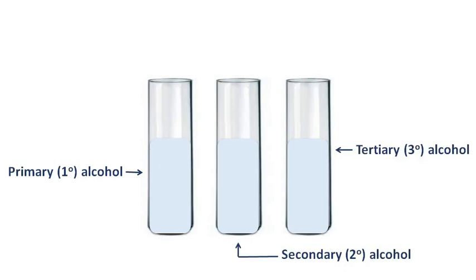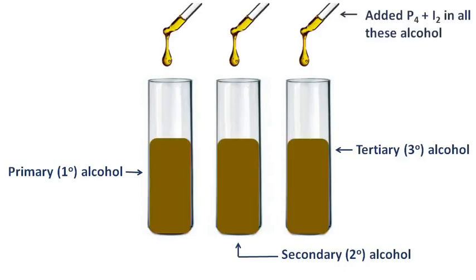So we have to test these alcohols using a specific alcohol test. To test these alcohols we can use Victor Meyer's test, and in this method the alcohol is treated with red phosphorus and iodine, and an alkyl halide is formed as shown in the figure.